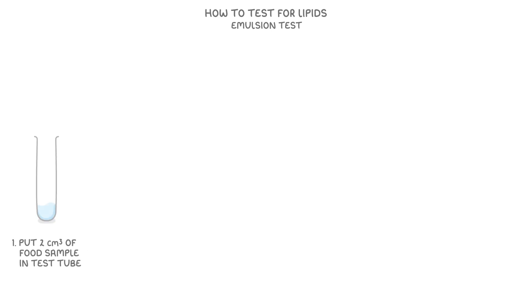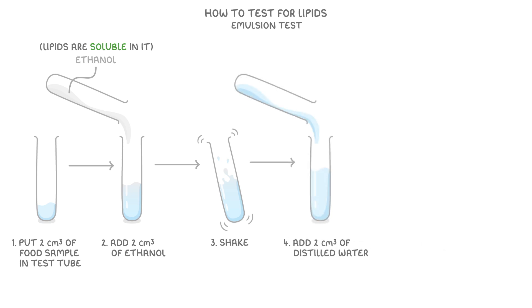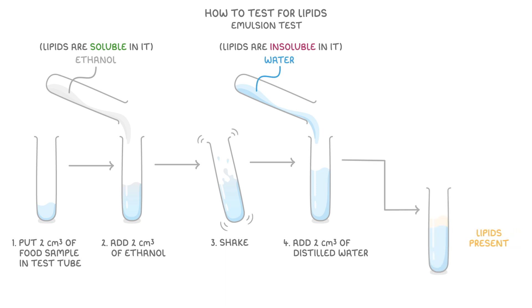Finally, let's learn how to test for lipids in a food sample using the emulsion test. First, we put 2cm³ of our food sample in a test tube, then add 2cm³ of ethanol — a clear alcohol — because lipids are soluble in it. Next, we give it a good shake to dissolve any lipids present, then add 2cm³ of distilled water, because lipids are insoluble in it. If lipids are present, we'll see a milky white emulsion form — this is our positive result. This happens because the lipid-ethanol solution separates from the water and forms tiny droplets that scatter light, creating that milky appearance.